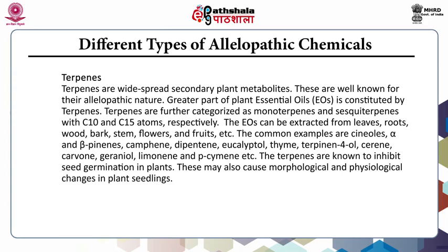The next class is terpenes. The greater part of essential oils is constituted by terpenes, which are categorized as monoterpenes with 10 carbon atoms and sesquiterpenes with 15 carbon atoms. Essential oils can be extracted from leaves, roots, wood, bark, stem, flowers and fruits. Examples include cineols, alpha and beta pinene, camphene, dipentene, eucalyptol, thymol, terpenes, parazamine, serine, camphor, geraniol and limonene. They inhibit seed germination in plants and may also cause morphological and physiological changes in plant seedlings.